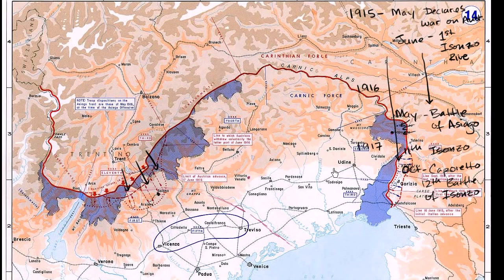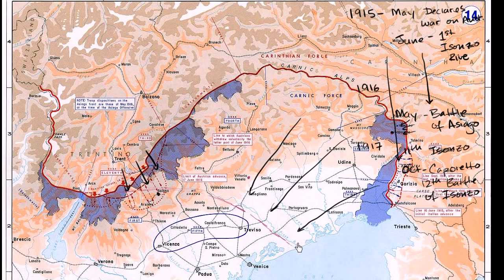Through October and early November 1917, over the next several weeks, the Germans and Austro-Hungarians are able to push the Italians all the way back behind the Piave River, pushing the front roughly back to that new boundary.